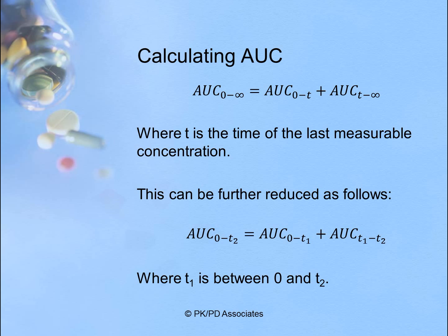You can further reduce this by saying AUC from time zero to T2 is equal to AUC zero to T1, plus AUC T1 to T2, where T1 is some time between zero and T2. So you can divide your AUCs into as small pieces as you want, as long as you have data to support that.